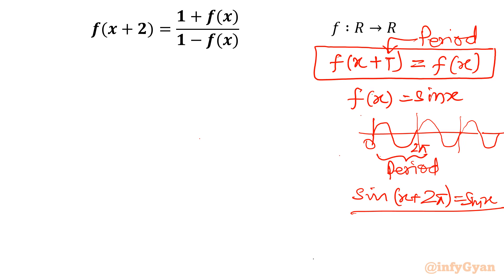Now let us consider our original equation as equation number 1. My target is to frame our functional equation in the form f(x + T) = f(x). Once that is done, I will identify T as the period.